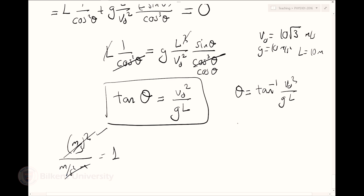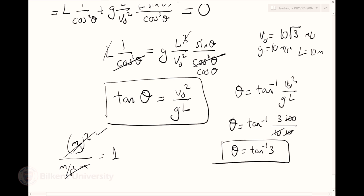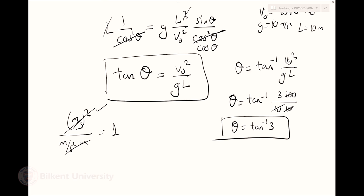Putting in the numbers: v0² = 300, g·l = 100, so tan θ = 300/100 = 3. Therefore theta = arctan(3), which is not 45 degrees. So do not memorize stuff. You have better tools — you can take derivatives. You're more powerful than you realize. Just relax and use these tools.